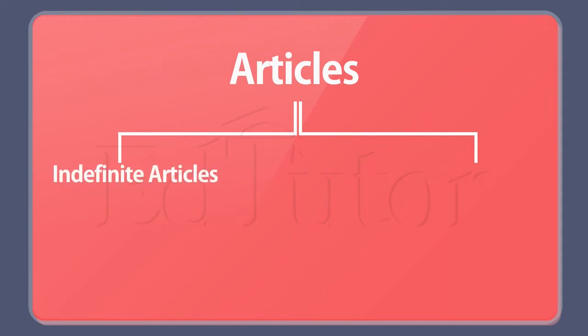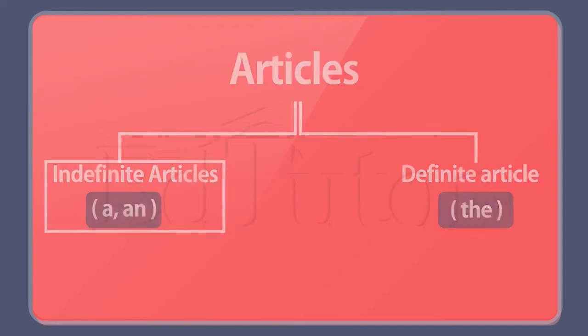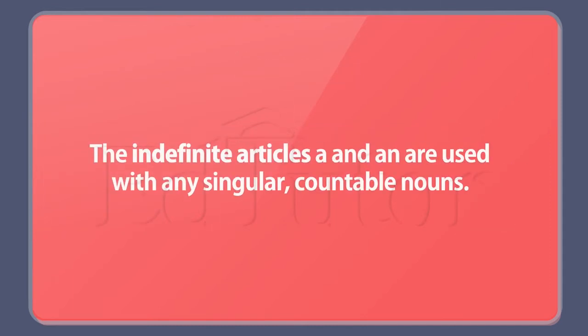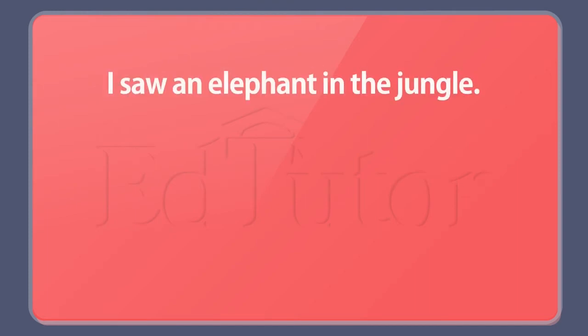Indefinite articles, which are 'a' and 'an', and the definite article, which is 'the'. Let's look at indefinite articles first. The indefinite articles 'a' and 'an' are used with any singular countable nouns. For example: I saw an elephant in the jungle. I want a car.